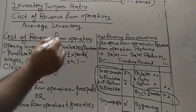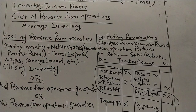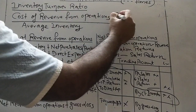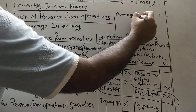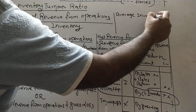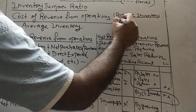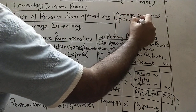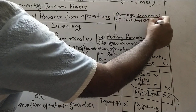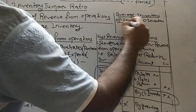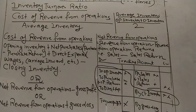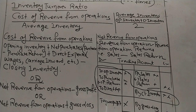There is one more formula remaining — Average Inventory. Average Inventory is equal to Opening Inventory plus Closing Inventory divided by 2. This completes the full formula for inventory turnover ratio.